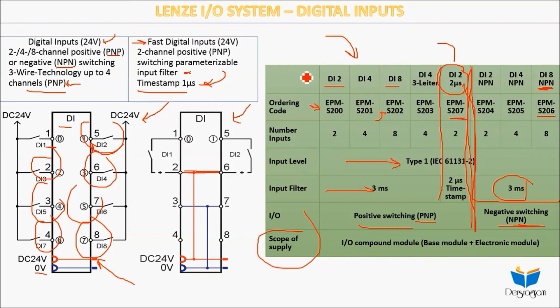The scope of supply is the compound module — base module plus electronic module — meaning we supply power to these modules via the CPU plus power modules. This covers the digital input module names, some features, connection diagrams for Lenze PLCs. That's it for this video — see you in the next one.